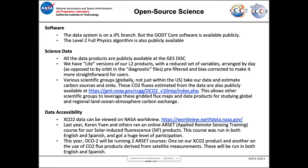On open source science: the software is on a JPL branch, but the OODT core software is publicly available, as is the L2FP full physics algorithm. All data is publicly available at GES DISC. We provide 'light versions' — a daily file of L2 products — and various scientific groups use the data to estimate carbon sources and sinks. Those estimates are also publicly available. CO₂ data can be viewed on NASA Worldview, and last year an online remote sensing course was run on how to use the products, with training on flux products continuing this year.